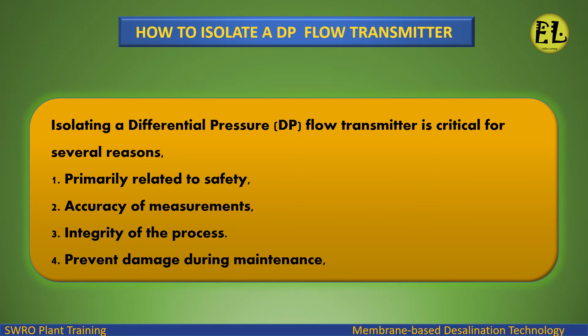Isolating a differential pressure, DP, flow transmitter is critical for several reasons: 1. Primarily related to safety. 2. Accuracy of measurements. 3. Integrity of the process. 4. Prevent damage during maintenance.